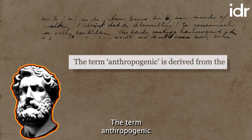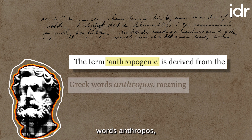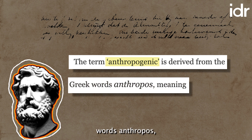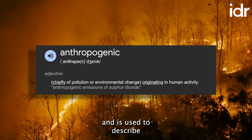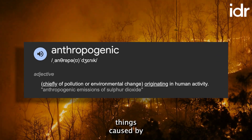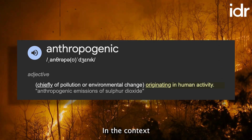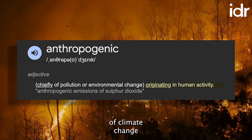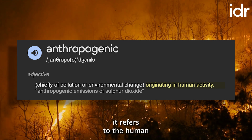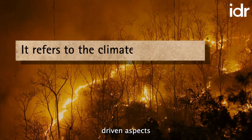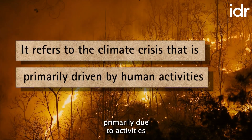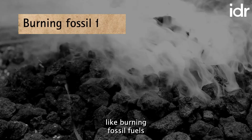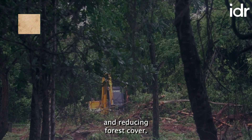The term anthropogenic comes from the Greek words anthropos, meaning human, and genesis, meaning origin, and is used to describe things caused by human actions. In the context of climate change specifically, it refers to the human-driven aspects of the climate crisis, primarily due to activities like burning fossil fuels and reducing forest cover.